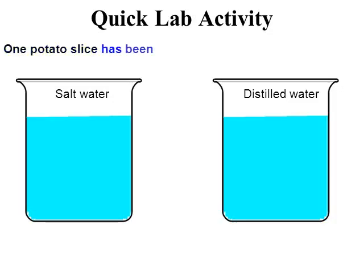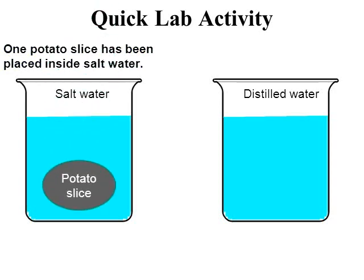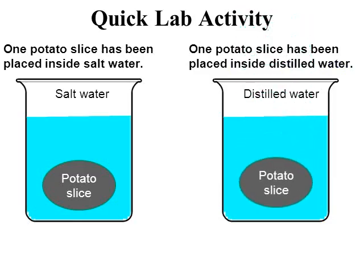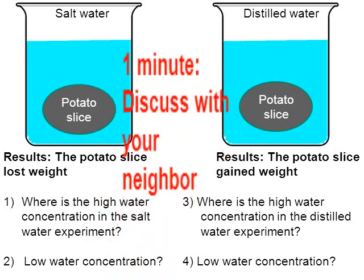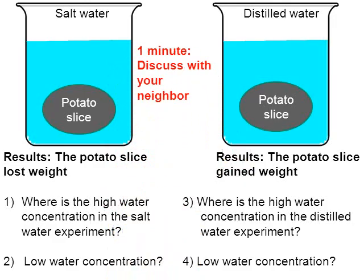Here's a quick lab activity. A potato slice is placed in a container of salt water, and another potato slice in a container of distilled water. After 30 minutes, if you were to weigh them before and after, the potato slice lost weight in the salt water container, but in the distilled water the potato slice got heavier — it gained weight. Pause the video and try to answer these questions. I'm going to go over the answers in 3, 2, 1.